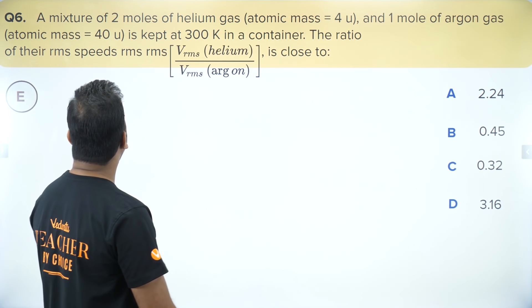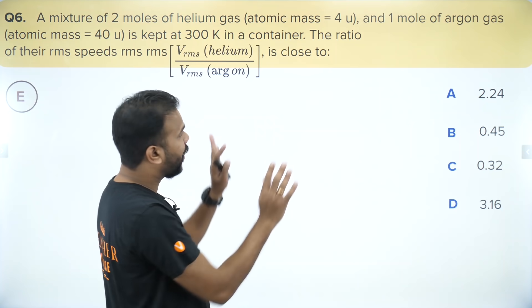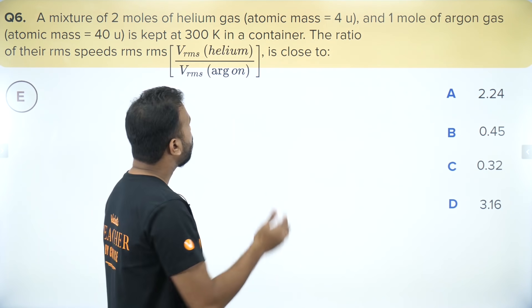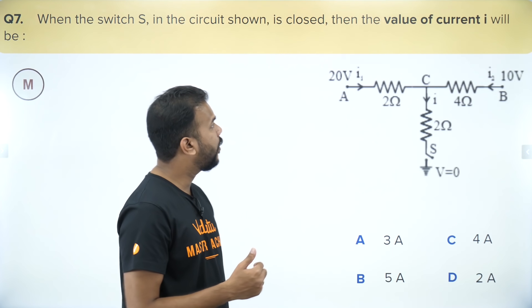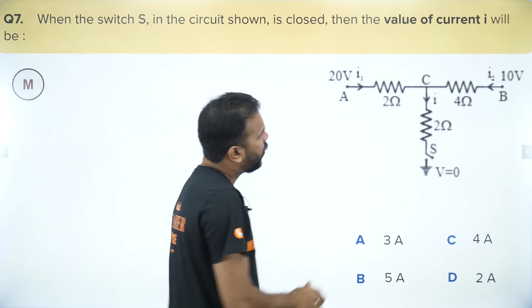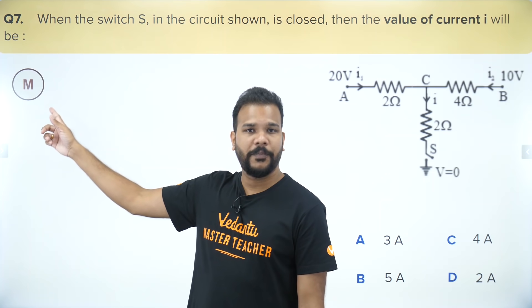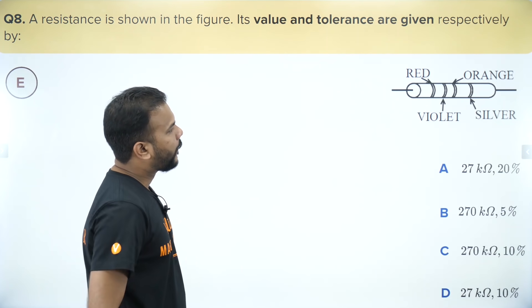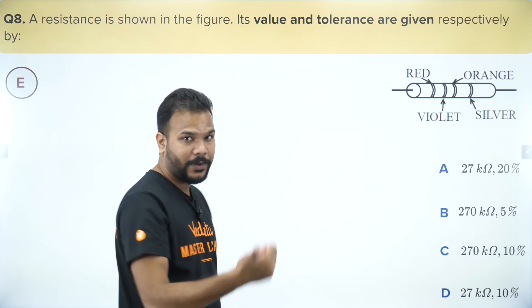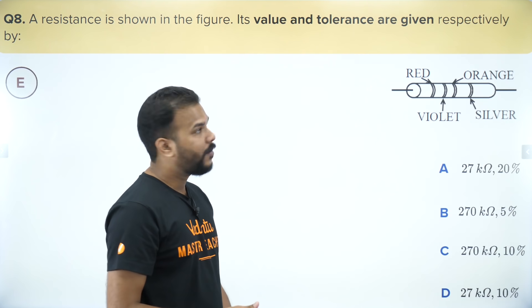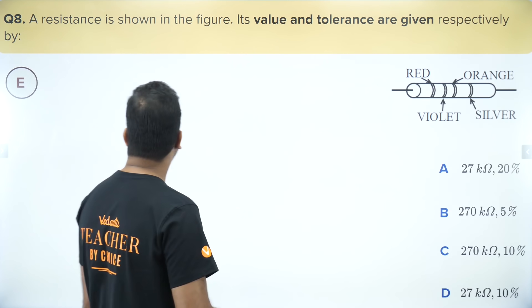A thermodynamics or KTG question — find the ratio of RMS speed using √(3RT/M). All information appears to be given, so applying the formula directly. Marking as easy. Next, a current electricity question — finding the value in a branch; without a battery given, we use nodal analysis. Doable but not very fast, marking as mediocre. Then a carbon resistor question — using the color code method (BB Roy of Great Britain Very Good Wife) to find resistance and tolerance. Marking as easy.